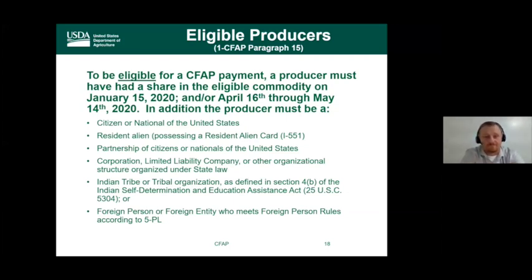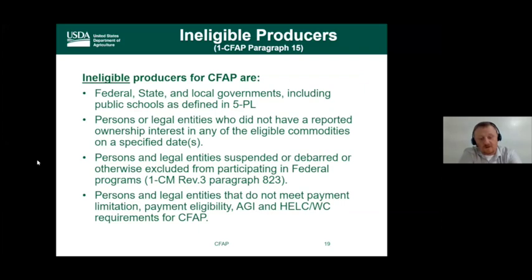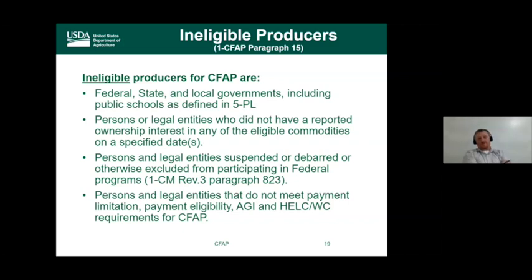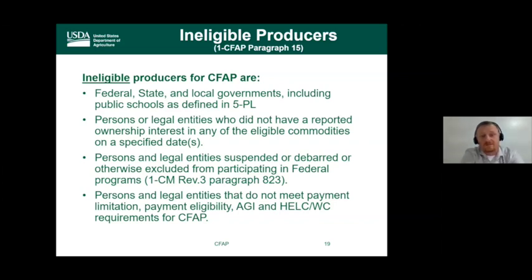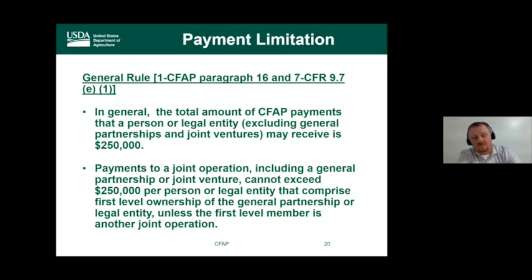Ineligible producers include federal, state, and local governments, public schools, legal entities without reported ownership in an eligible commodity on those dates, persons or entities suspended or debarred from federal programs, and persons or entities that do not meet payment limitation, AGI, or wetland compliance requirements.